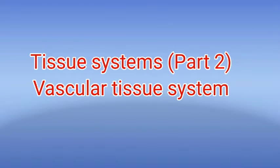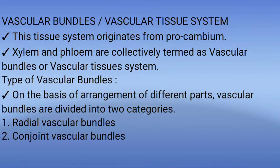Today we are going to discuss about Tissue Systems Part 2, under the Vascular Tissue System. The third type of tissue system is Vascular Bundles or Vascular Tissue System. This tissue system originates from Procambium. Xylem and phloem are collectively termed as Vascular Bundles or Vascular Tissue System.